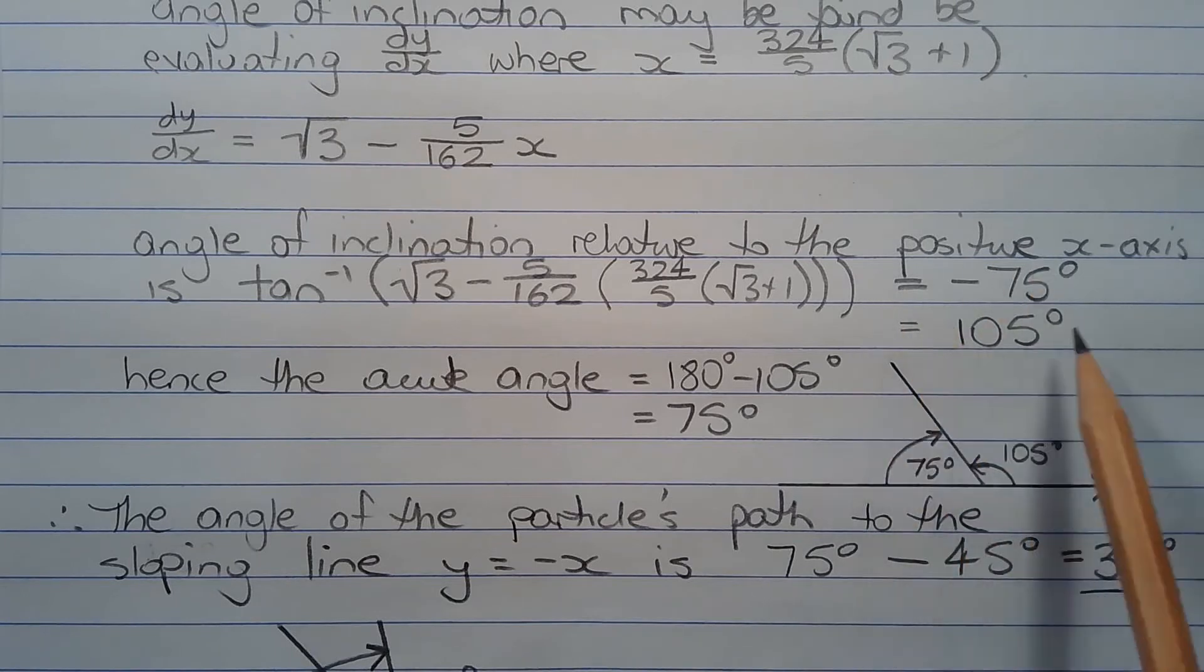Converting this negative angle into a positive angle by adding 180 degrees, that equals 105 degrees. And here is that angle shown on this diagram.